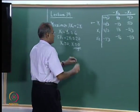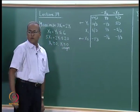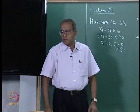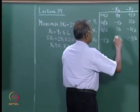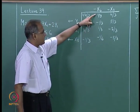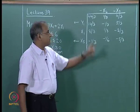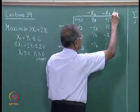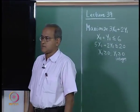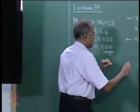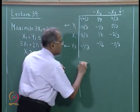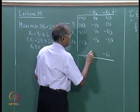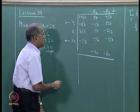We now do a dual simplex iteration. X5 is the variable that goes out, as it has a negative right-hand side value. The entering variable is found based on the minimum ratio rule. Leaving out the negative portion: 1/3 divided by 1/6 is 2, and 4/3 divided by 5/3 is 4/5. Since 4/5 is smaller, variable X3 enters the basis. After one simplex iteration, X5 becomes non-basic and X3 replaces X5 in the basis.